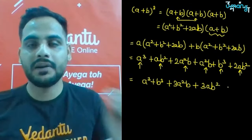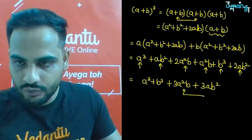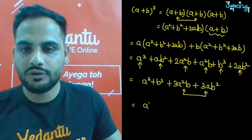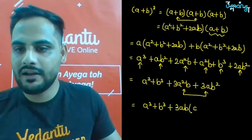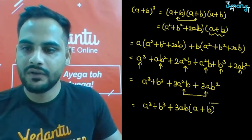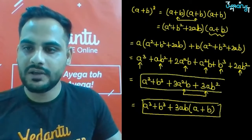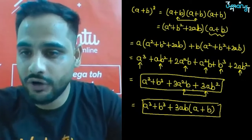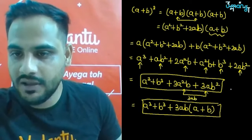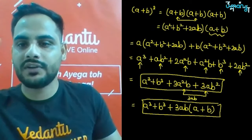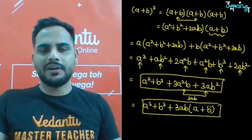From the last two terms, 3a²b+3ab², if we take 3ab common, we are left with a and b in the bracket. So another form is (a+b)³ = a³+b³+3ab(a+b). Both forms are very important and you should remember both of them.